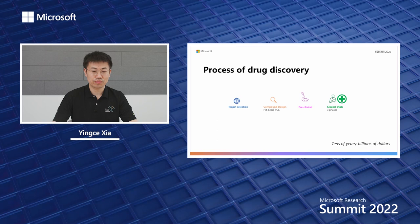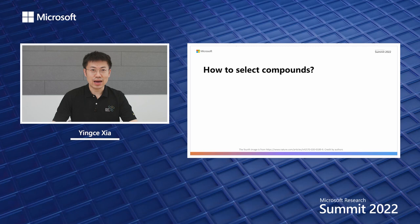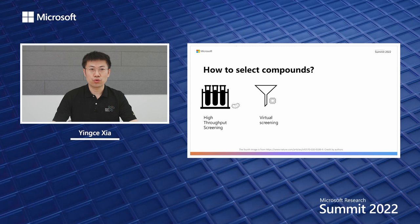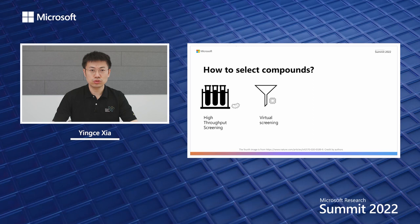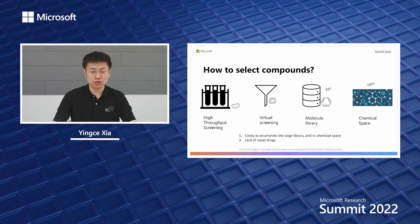An important step for drug discovery is how to select the compounds. People usually use high throughput screening or virtual screening to select the candidate drugs. High throughput screening uses automatic equipment to rapidly test thousands to millions of drugs for biological activity, while virtual screening does the similar thing using computer programs. Both rely on a molecule library, and there are two limitations: it is very costly to enumerate all compounds in a large library, and even the largest library is much smaller than the complete chemical space. Also, the selected drugs lack novelty, which is limited by the molecule library.